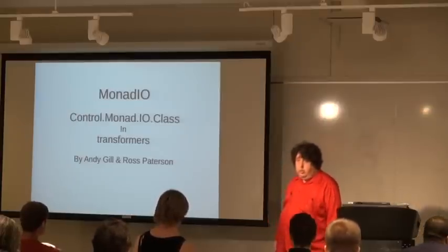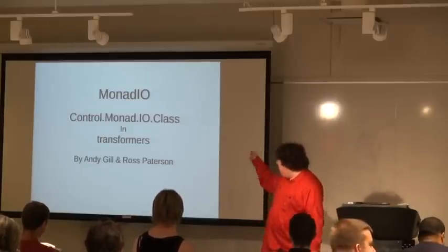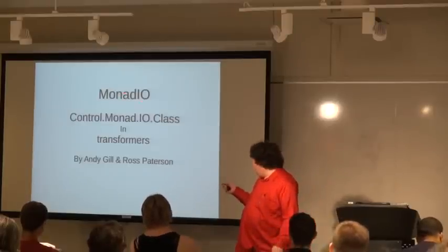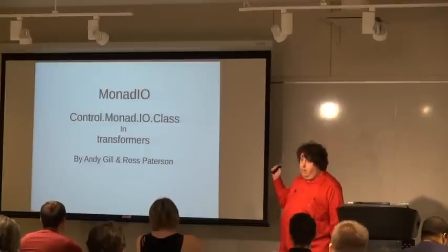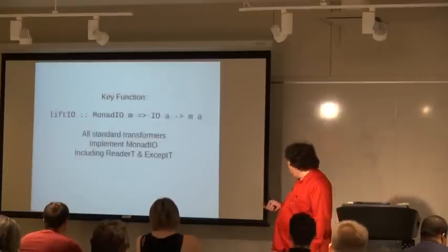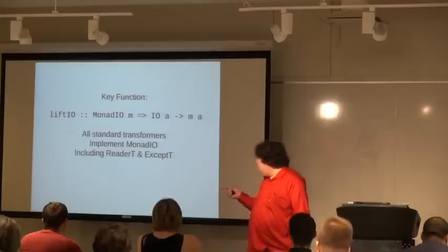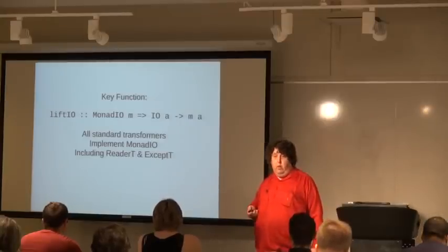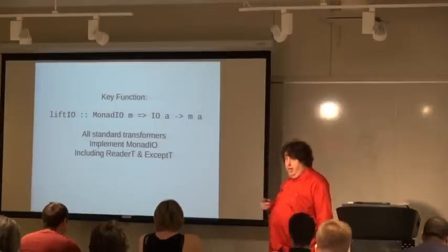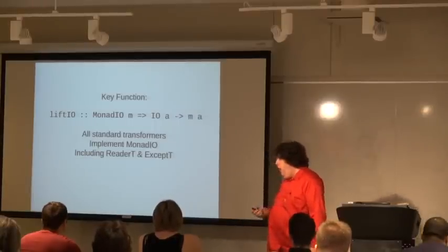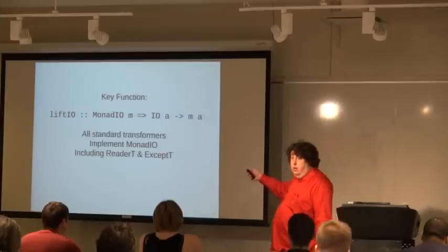I'm going to give you four different solutions. Solution number one is MonadIO, in the module Control.Monad.IO.Class in the transformers package by Andy Gill and Ross Patterson. The key function is called liftIO, and the nice thing is it automatically does the right number of lifts — whatever the right number is, it will lift from the IO Monad all the way up into whatever Monad you want in one operation. All the standard transformers implement MonadIO, including ReaderT and ExceptT.